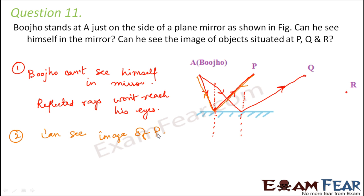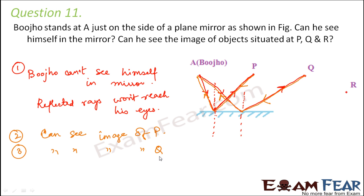The same holds true for Q as well. From Q, if a ray of light is incident like this, it gets reflected like this and is able to reach Bujo's eyes. Therefore Bujo can see the image of Q.